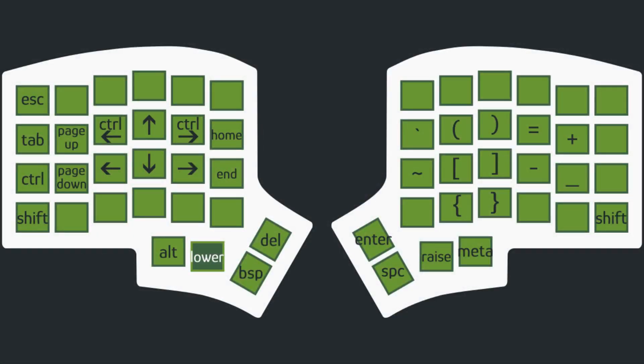The right side of the lower layout provides easy access to all the different parentheses, except for angled brackets, as these are already well placed on the Colemak layer. Additionally, you'll find arithmetic operators here. I consider the special characters on the number row — like the hash, the dollar symbol, or the asterisk — to be no problem, so I did not put duplicates of them here. I really love the easy access to those characters on the right lower layer, as this makes my life much easier when coding. All in all, I consider this exact lower layer to be the real game changer when it comes to efficiency and ergonomics.